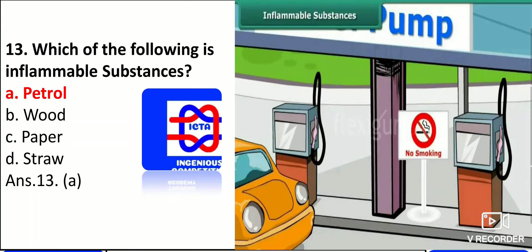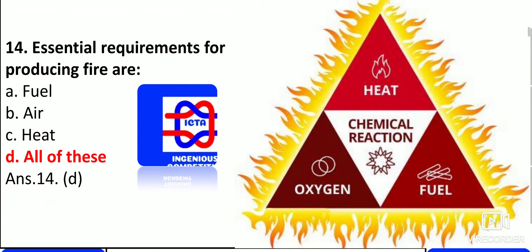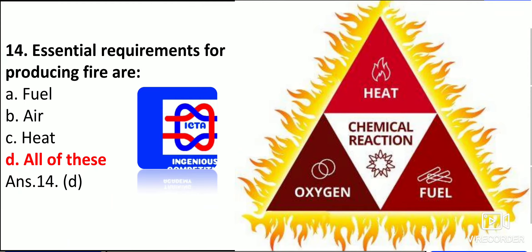Which one of the following is an inflammable substance? That is petrol. Wood takes time, paper takes time, straw also takes time — but petrol has the lowest ignition temperature and burns fastest. The essential requirements for producing fire are: fuel (wood, paper, or any inflammable material), air (which contains oxygen), and heat (ignition).